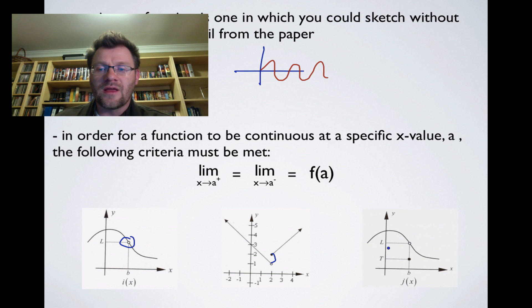And finally, in the final case, as we approach this height right here from the left hand side, we get to the same height as if we approach it from the right hand side, but in this case f of a, or in this case f of b, is at a totally different height. So again, another example of why this thing is not continuous.